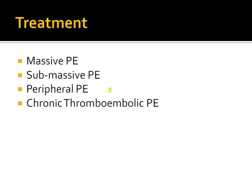Coming to treatment options — once you diagnose someone with pulmonary embolism, you need to categorize it into four different types. The third type, peripheral PE, is probably the most common type you will encounter, and treatment is well established for it. Then there are massive PE, submassive PE, and chronic thromboembolic PE.